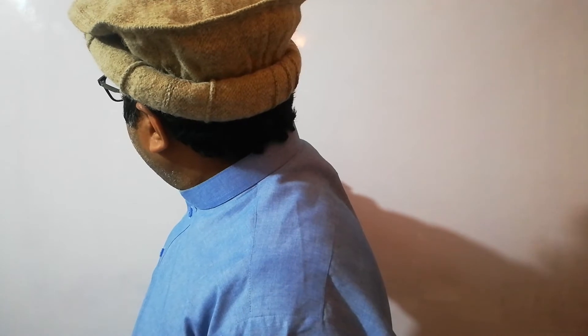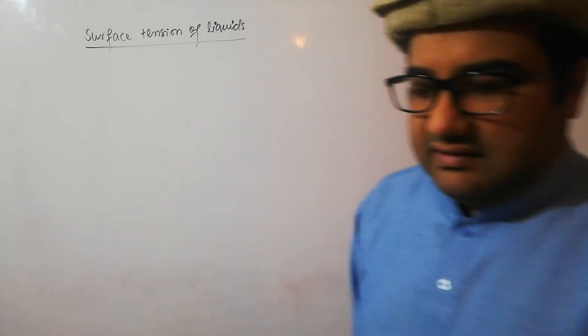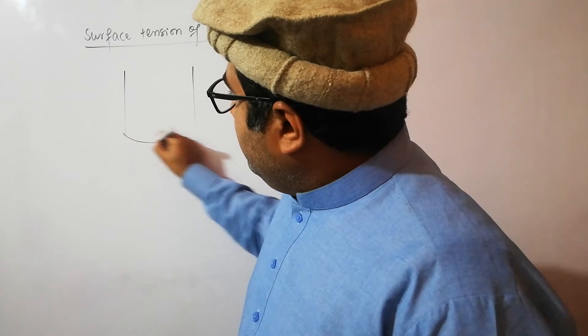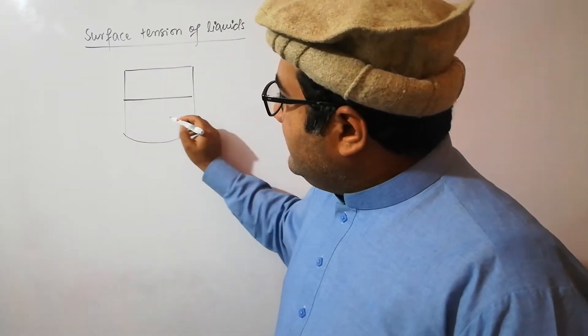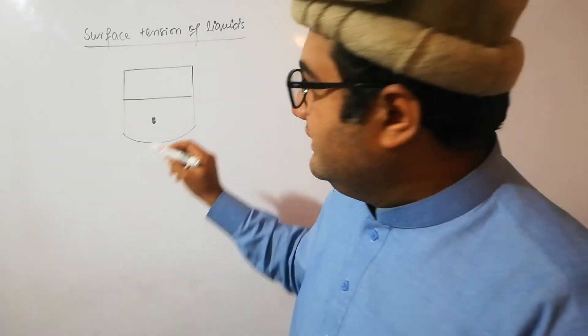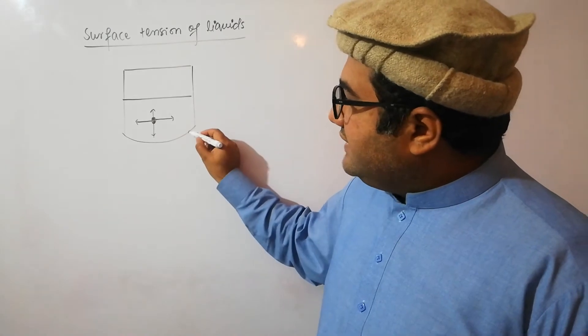Welcome, and let's discuss another new topic of the chapter on liquids — that is the surface tension of liquids. Surface tension is a very important concept in the study of liquids. Suppose this is a liquid in a container. There is a molecule in the interior of the liquid; this molecule will experience cohesive forces in all directions — on the right, on the left, below, and above. So the net cohesive force on this molecule will be zero; all the cohesive forces will be counterbalanced.